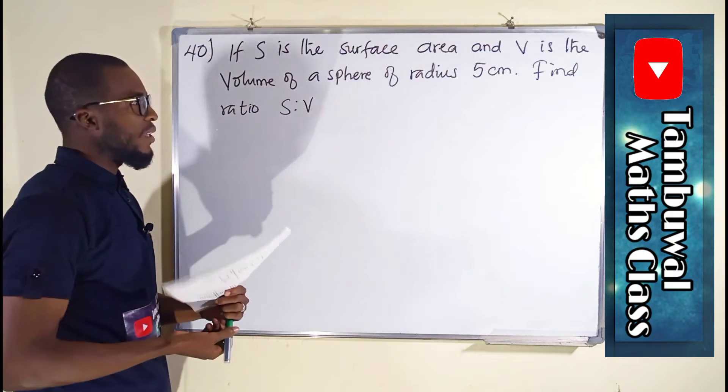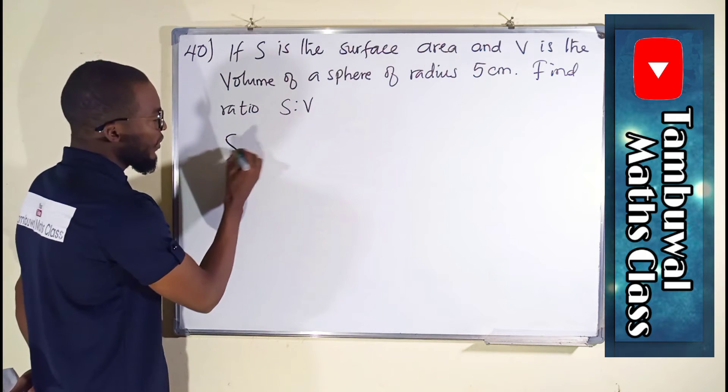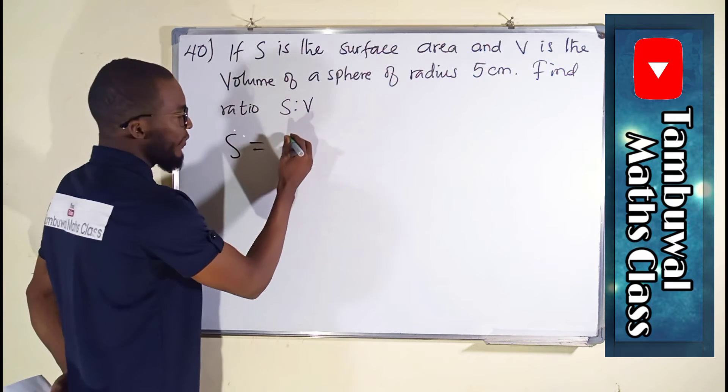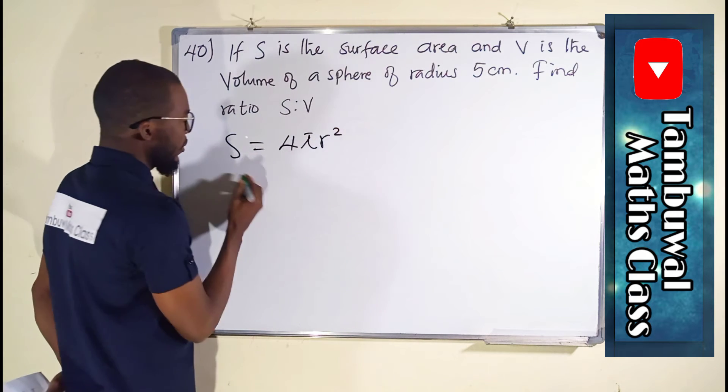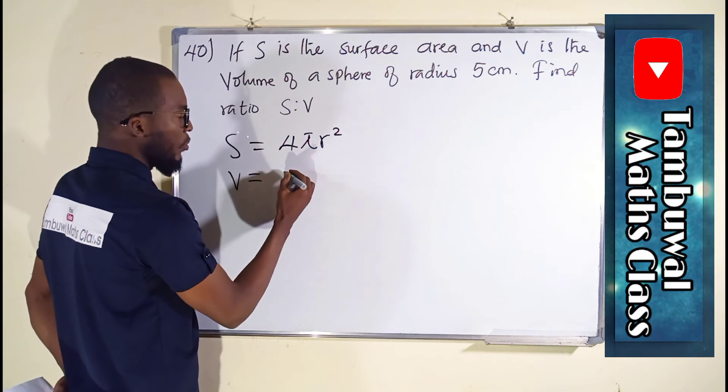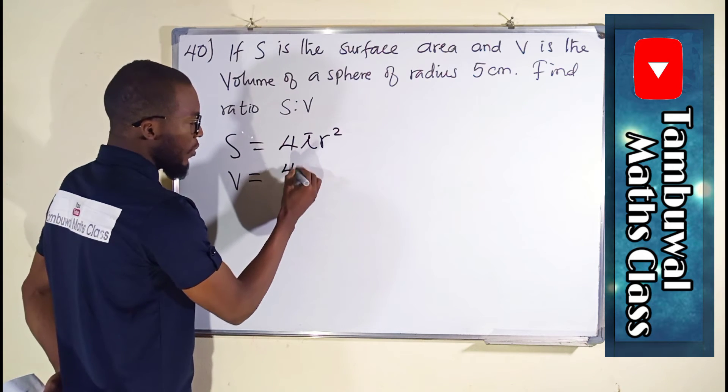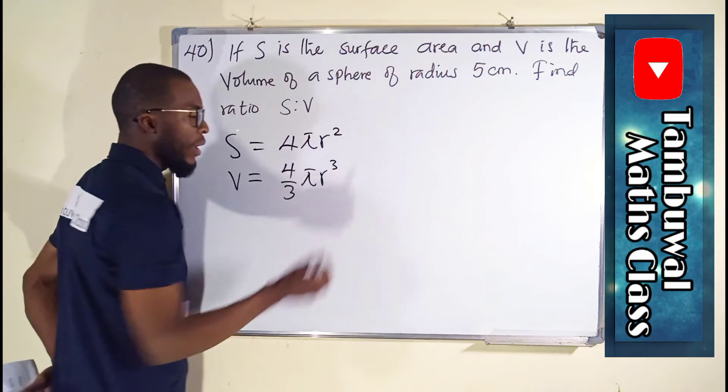First of all, let us find the formulas. Surface area of a sphere is 4πr². For volume, it is equal to 4/3 πr³.